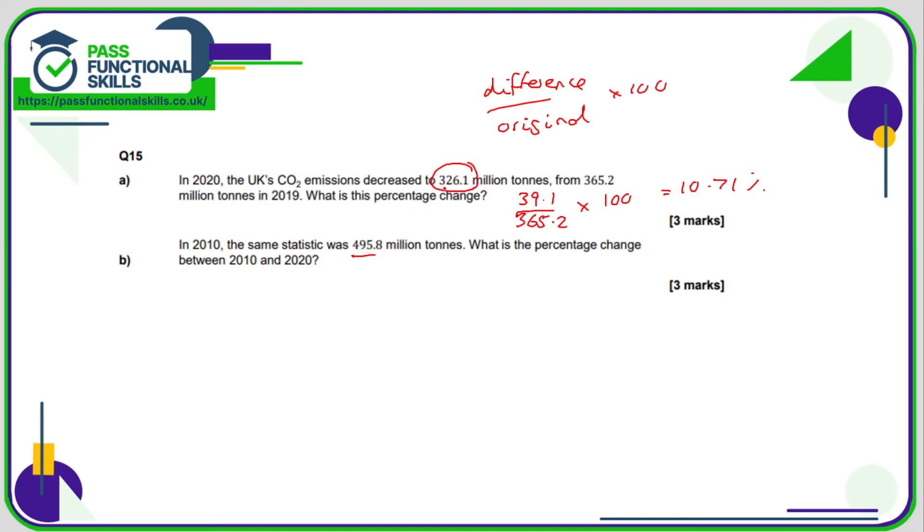495.8 minus 326.1, that is a difference of 169.7. And we're going to divide that by what it was originally, and it was originally 495.8. The original value is the value at an earlier point in time, and multiply that by 100. So 169.7 divided by 495.8 multiplied by 100, and that works out as approximately 34%.